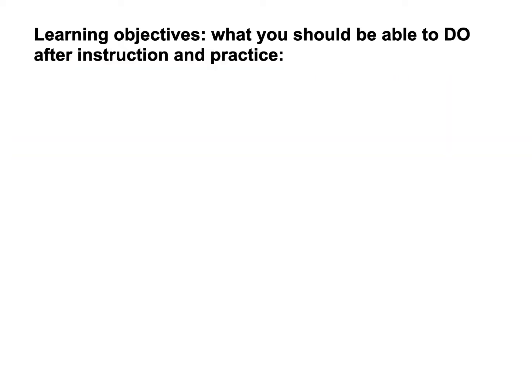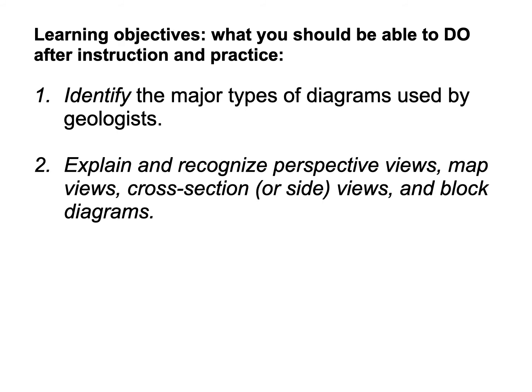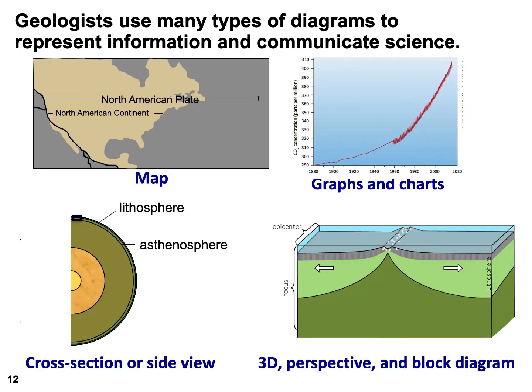In this course, we're going to use a lot of diagrams and visualizations, and I want to introduce you to some of the main types. Today, we're mostly going to focus on maps, cross sections, and then diagrams that show three dimensions, like block diagrams. Sometimes these are also called perspective views, if it's in a photograph.